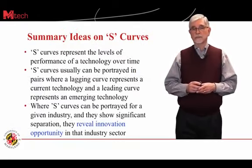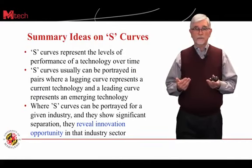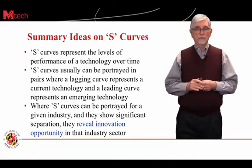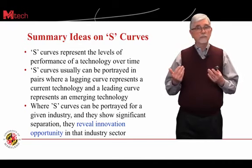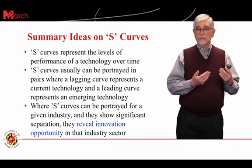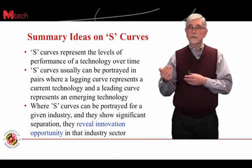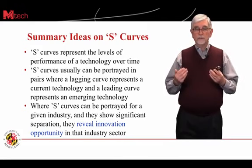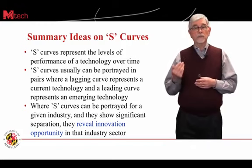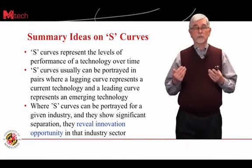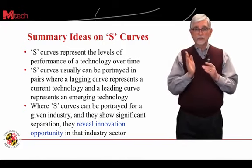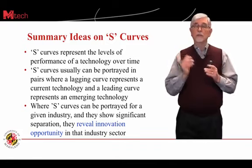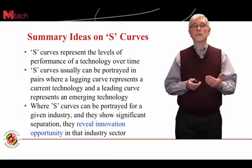In summary, S-curves represent the levels of performance of technology over time — they start low and flatten out over time. They can be portrayed in pairs where the lagging curve on the left represents current technology and the leading curve on the right represents an emerging technology that will ultimately displace the other. Where S-curves in a given industry show significant separation in performance, they reveal an innovation opportunity. Where the gap between curves is large, that technology represents a real innovation opportunity in that industry sector.